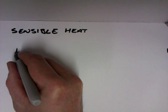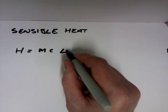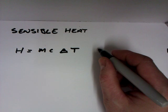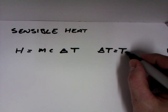So first of all we look at sensible heat and the calculation for that is H equals MC delta T. So delta T equals T2 minus T1. So that's the temperature difference.